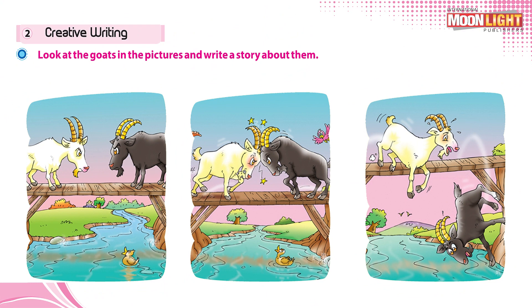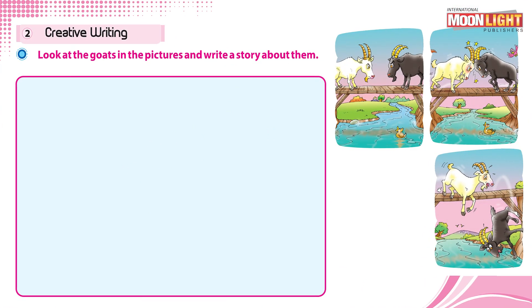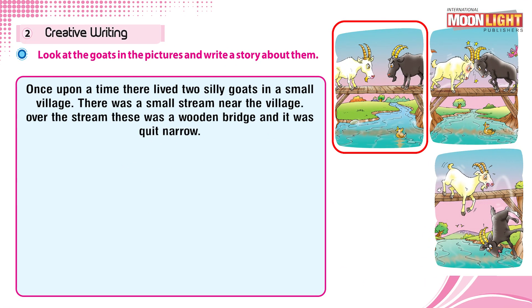Now it's time to be creative. We'll be looking at pictures and creating our own story. Look at the first picture — you can see there are two goats. Our first two to three lines should be about the setting of the story, meaning the characters, the place, the time. Let's start writing our setting.